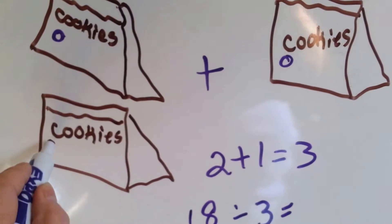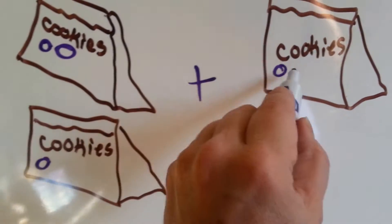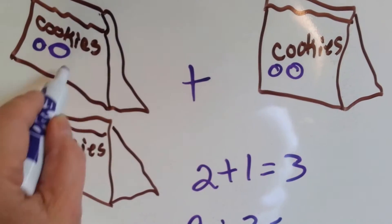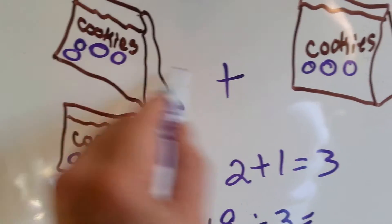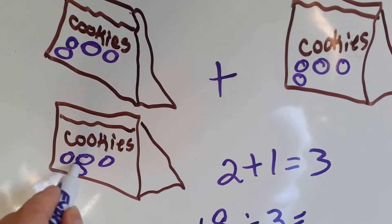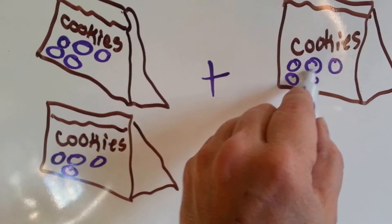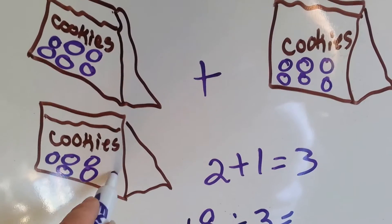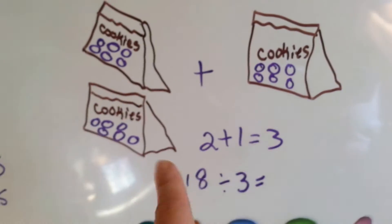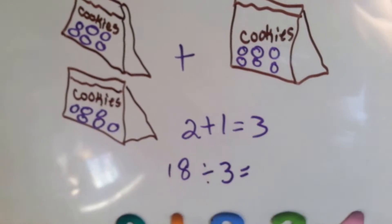1, 2, 3, 4, 5, 6, 7, 8, 9, 10, 11, 12, 13, 14, 15, 16, 17, 18. How many cookies are in each bag? 6.